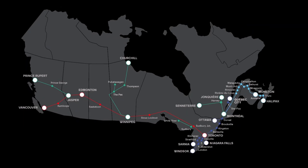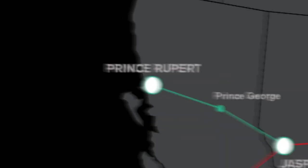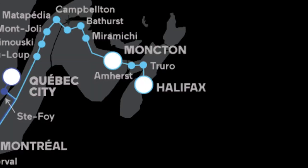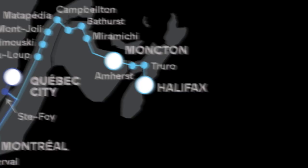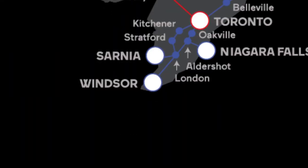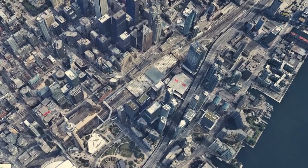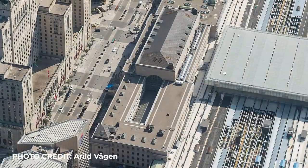Via Rail services span from Prince Rupert, British Columbia to Halifax, Nova Scotia, reaching as far north as Churchill, Manitoba, and as far south as Windsor, Ontario, with all routes passing through Toronto's Union Station.